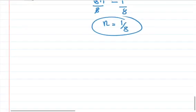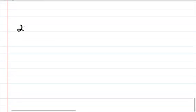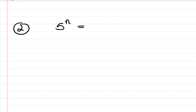Question number 2: 5 to the power n is equal to 1 divided by the square root of 5.